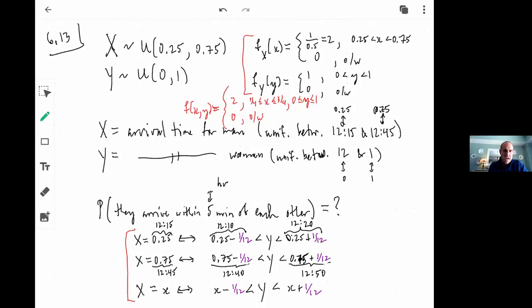So as we surmise, X is going to be the arrival time for the man at this restaurant, and Y is the arrival time for the woman. And we were given that their arrival time was between, for the man, between 12:15 and 12:45 uniformly. And we kind of convert that to a numeric scale. So we just say that that's basically uniformly distributed between one quarter and three quarters.